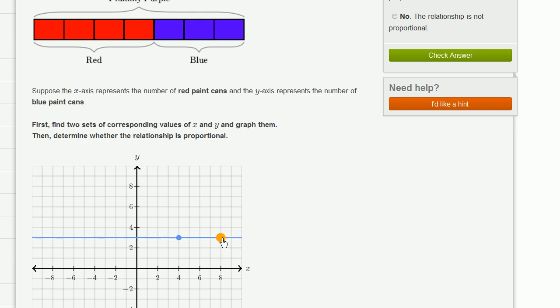If we had eight parts red, that's two groups of four. Then we're going to need two groups of three for the blue. Once again, the ratio of blue to red is always 3 to 4.